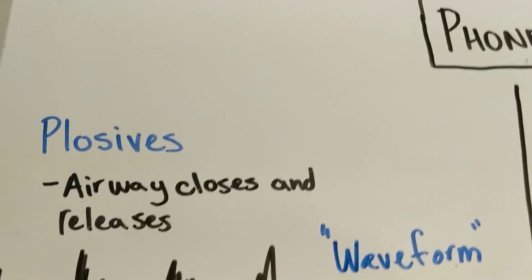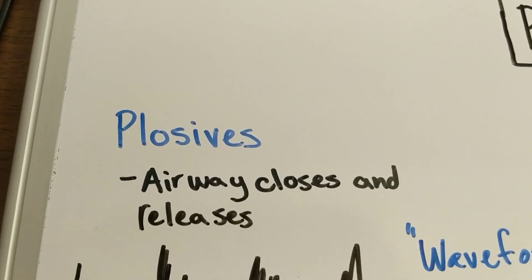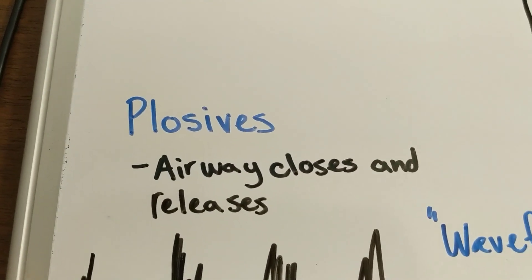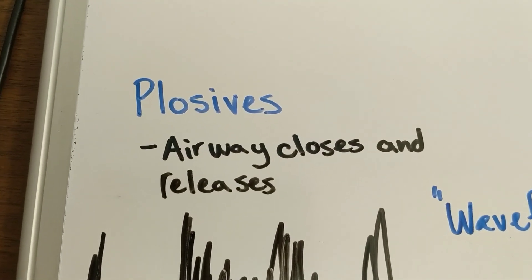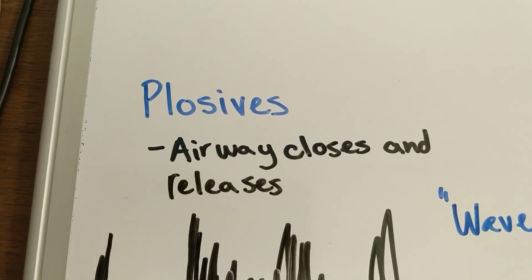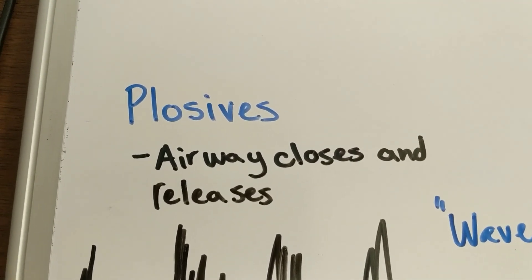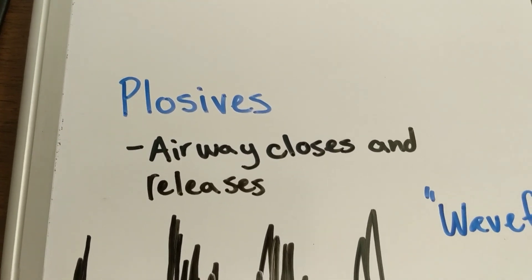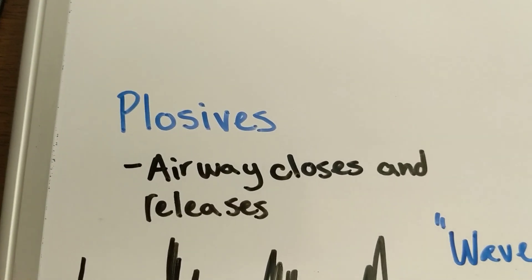The first thing we're going to talk about is distinguishing between different types of plosives. Plosives are a type of consonant in which your airway temporarily closes completely and then releases the air. Good examples of these are T and D, where you have to go 'ta' — you close the air, pressure builds up behind your tongue, and then you release the air.